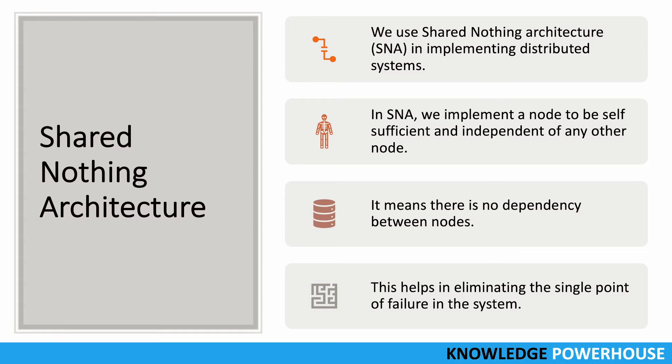Share Nothing Architecture means we are creating a distributed system where each node is self-sufficient and independent of other nodes. There is no dependency between the nodes, overhead is very less, and this also helps in eliminating the single point of failure in the system. With shared nothing, no single entity is managing all the other nodes — each node is independent.